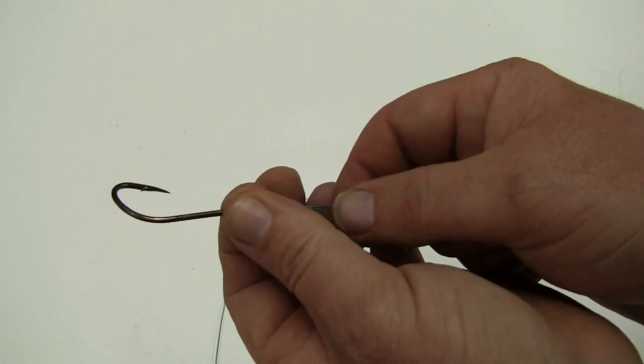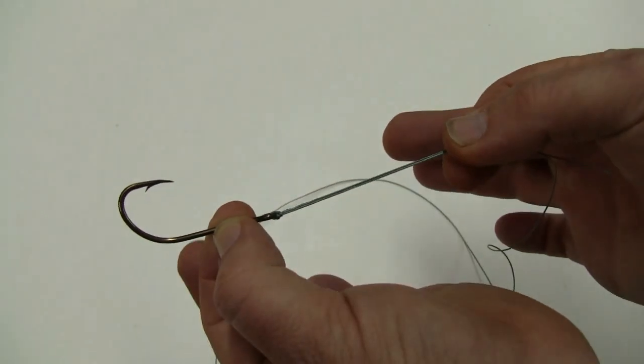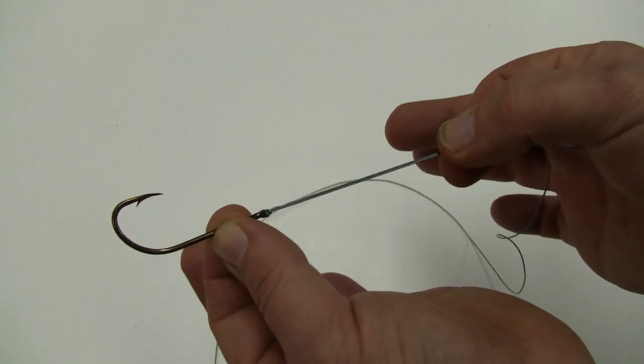So let's do a little experiment and tie this up on some 10 pound test mono and put the scales on it and see how strong this knot is.